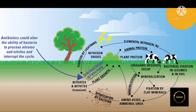When plants and animals die, bacteria and fungi present in the soil convert the nitrogenous wastes into nitrogenous compounds to be used by plants again. Certain other bacteria convert some part of them to nitrogen gas which goes back into the atmosphere. As a result, the percentage of nitrogen in the atmosphere remains more or less constant.